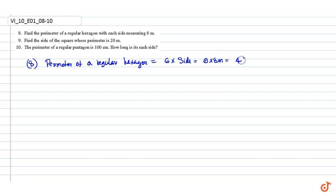Question 9: Find the side of the square whose perimeter is 20 meters. We know that the perimeter of a square equals 4 × side, which equals 20 meters. Therefore, side equals 20 meters divided by 4, which equals 5 meters.